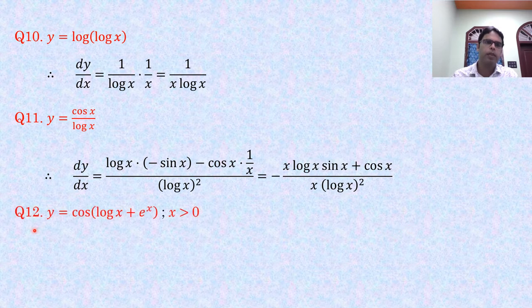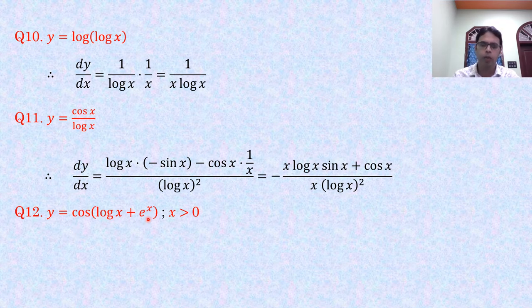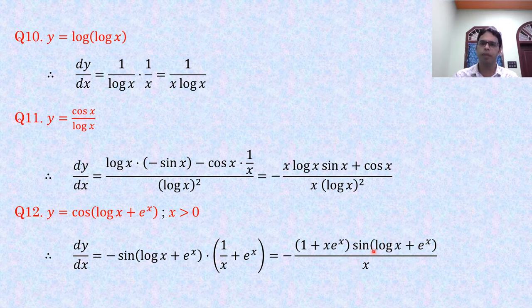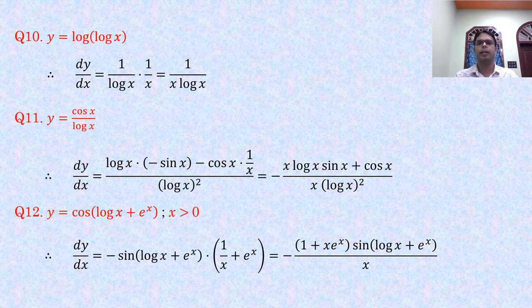Problem 12: y = cos(log x + e^x). The outer function is cos, so dy/dx = −sin(log x + e^x) · (1/x + e^x), which simplifies to −sin(log x + e^x)·(1 + x·e^x)/x.